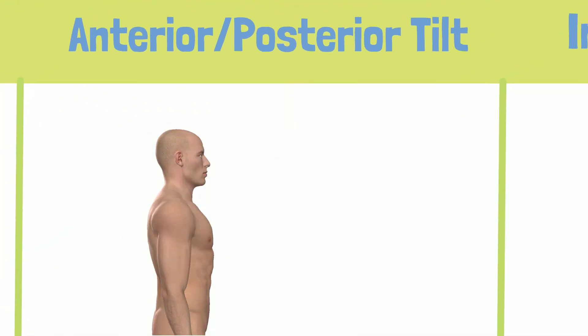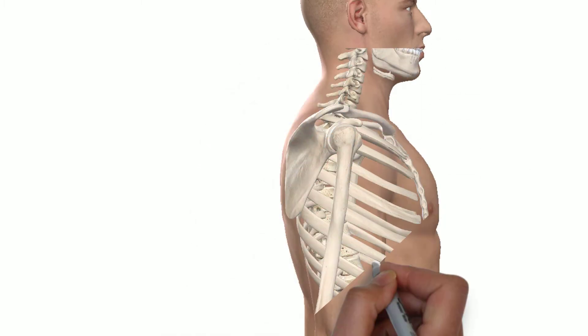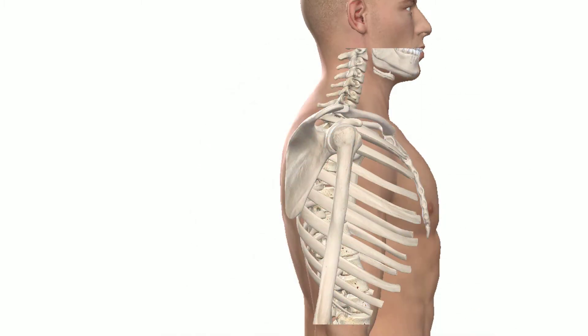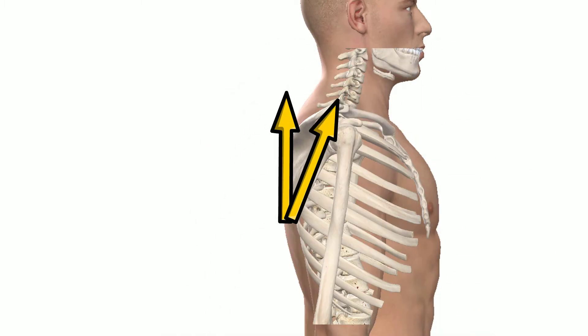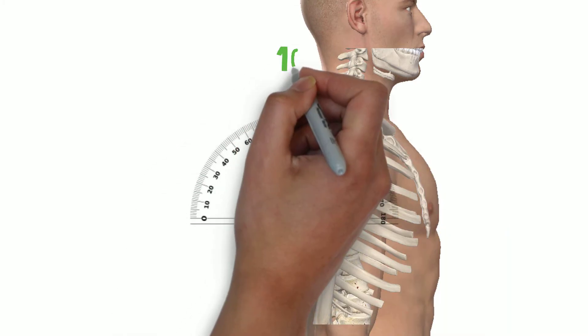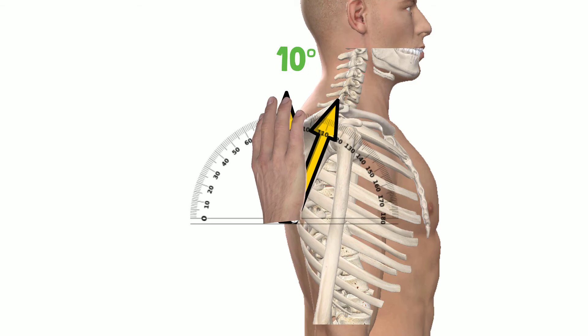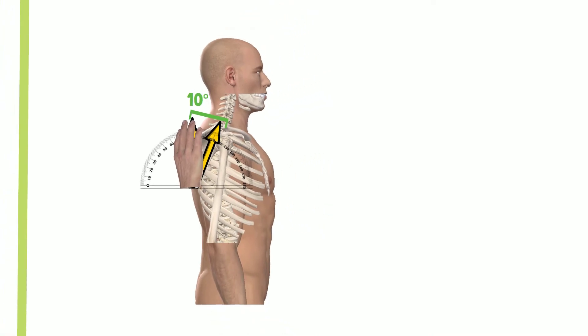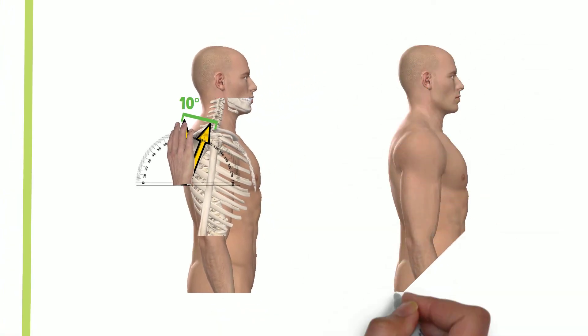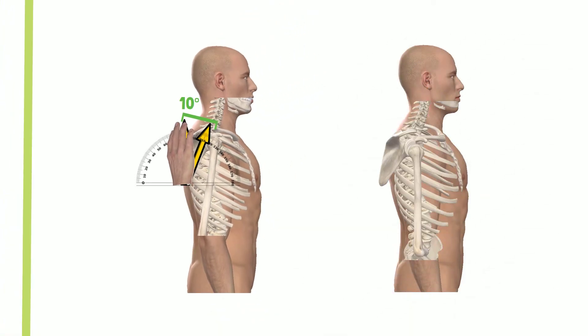Next is anterior-posterior tilting. The scapula is typically anteriorly tipped on the thorax about 10 degrees. Observe this from the sagittal view by placing your hand on the scapula, estimating the oblique vector running along the posterior scapula. Abnormal alignment in this case is an anteriorly tipped scapula.